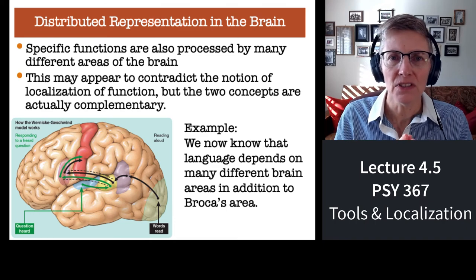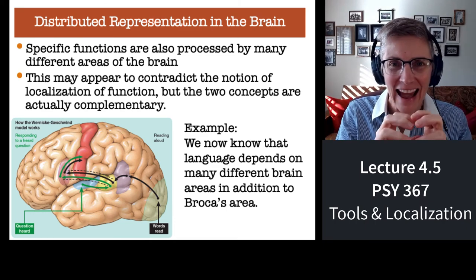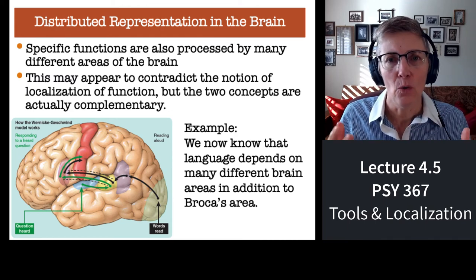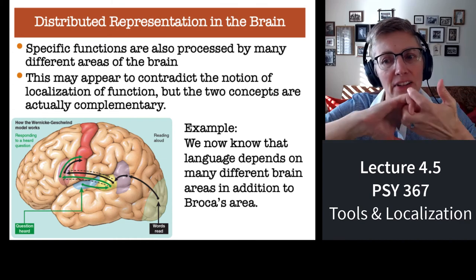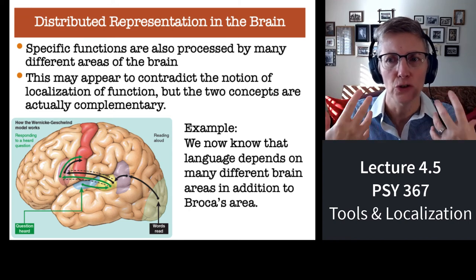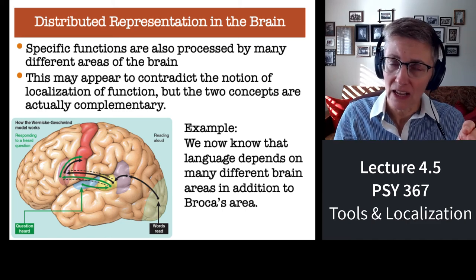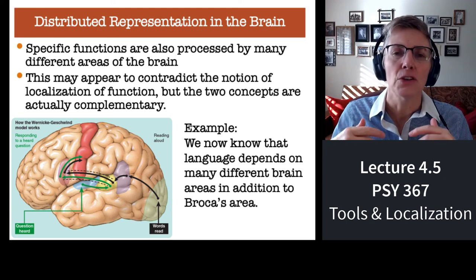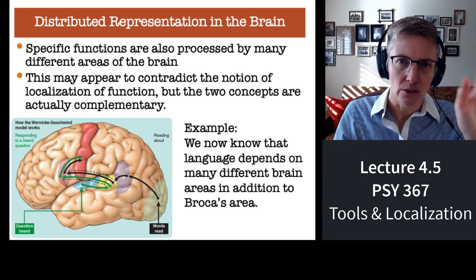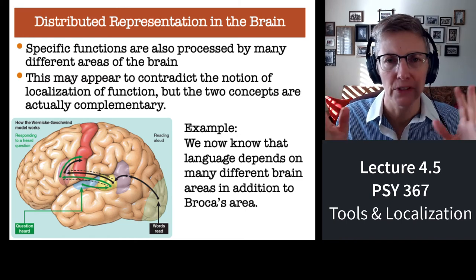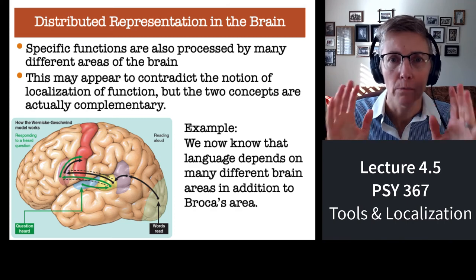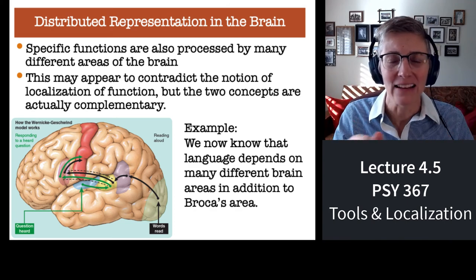I'm not throwing away the concept of localization — you can have localized areas of function and also rely on interconnectivity between those areas. For example, Broca's area and Wernicke's area work together; there are many connections between them and a few other areas, and it's the whole network together that gives rise to language. In science, people often argue localization versus distributed processing, but it turns out both are right. There is both localization of function and distributed processing.